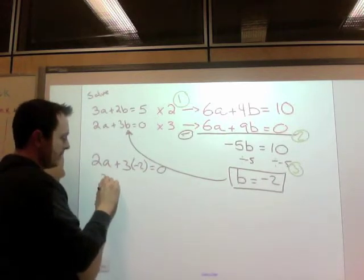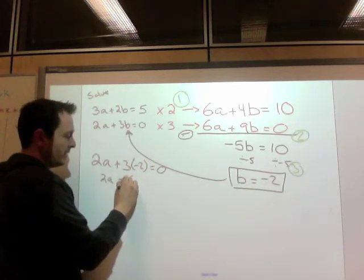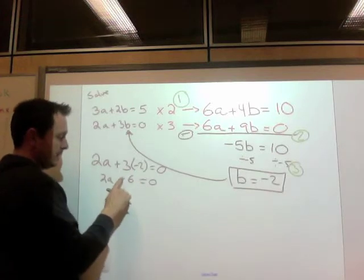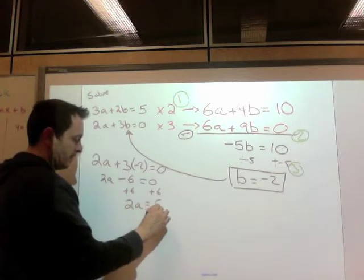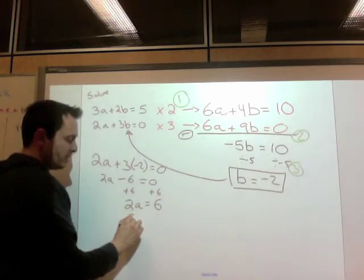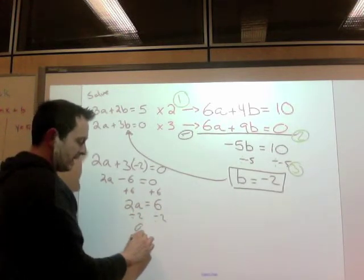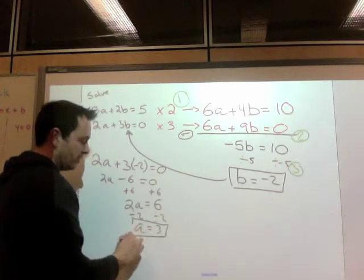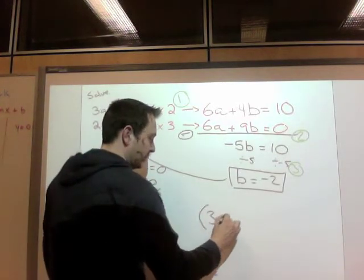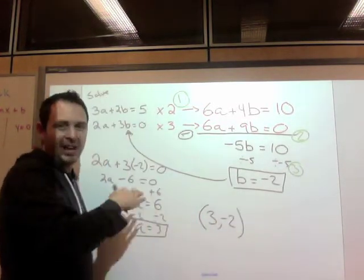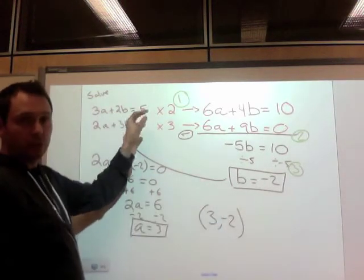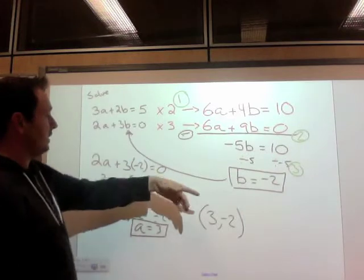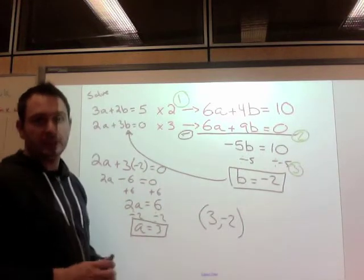So now solve. 2a, 3 times negative 2 is negative 6. I want my 6 on the other side, so I'm going to add 6 to both sides. I want 2 on the other side, so I'm going to divide it by 2. And a equals 3. So my coordinate 3, negative 2 on an ab grid, or a is 3, b is negative 2, is the solution to this system.